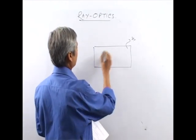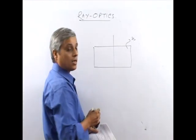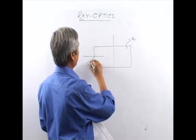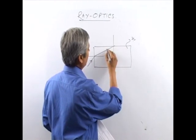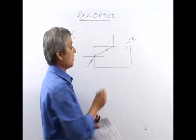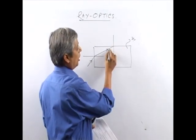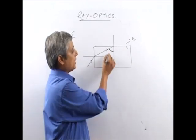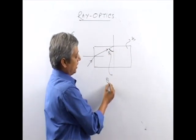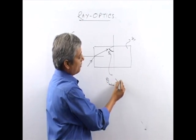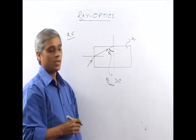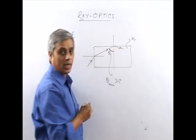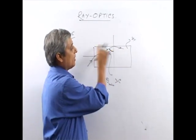Suppose light enters the rod like this. The minimum value of the angle at the lateral surface must be greater than the critical angle — theta minimum must be greater than the critical angle. Because if this angle is greater than the critical angle, then total internal reflection will occur at the lateral surface.